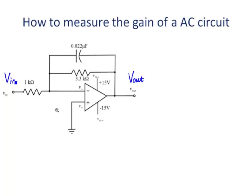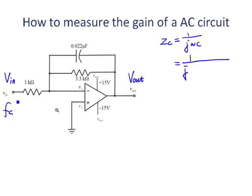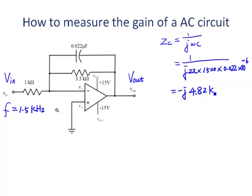We can convert the circuit into phasor domain. The impedance for the resistor is just the resistance. The impedance for a capacitor is 1 over jωC. Let's assume the frequency is 1.5 kHz sinusoidal signal, so ω equals 2π times 1.5k. The capacitance is 0.02 mF. Converting to standard units, we get negative j4.82 kΩ.